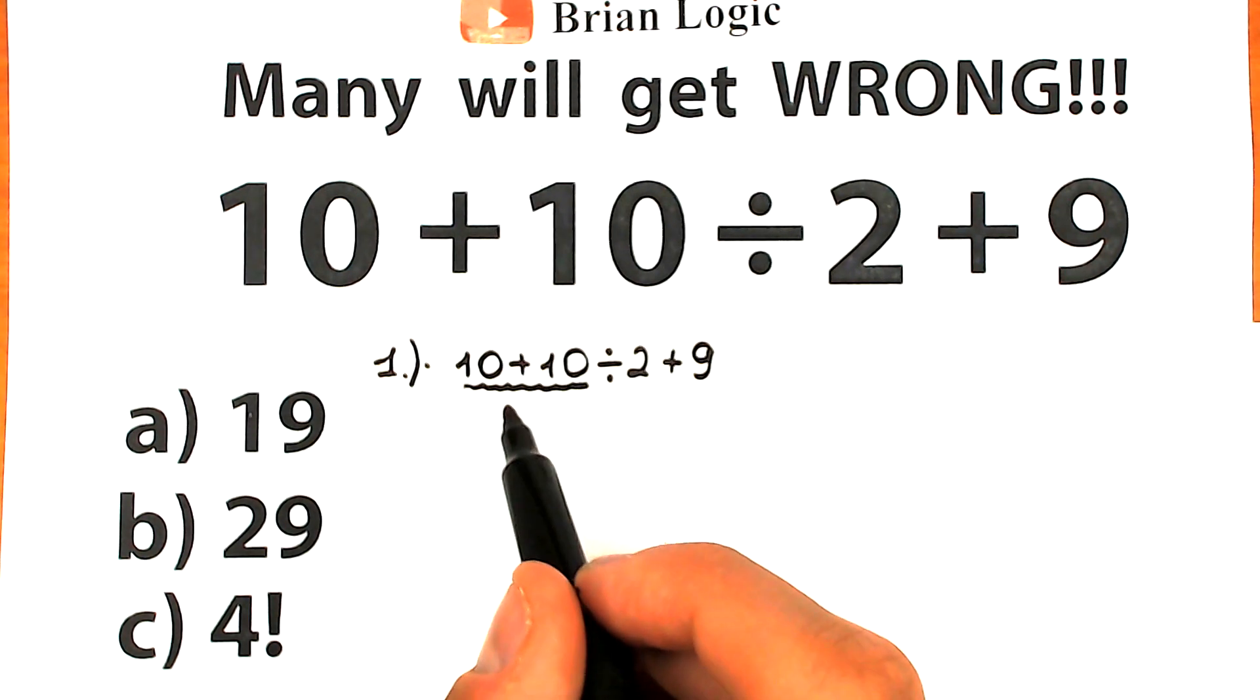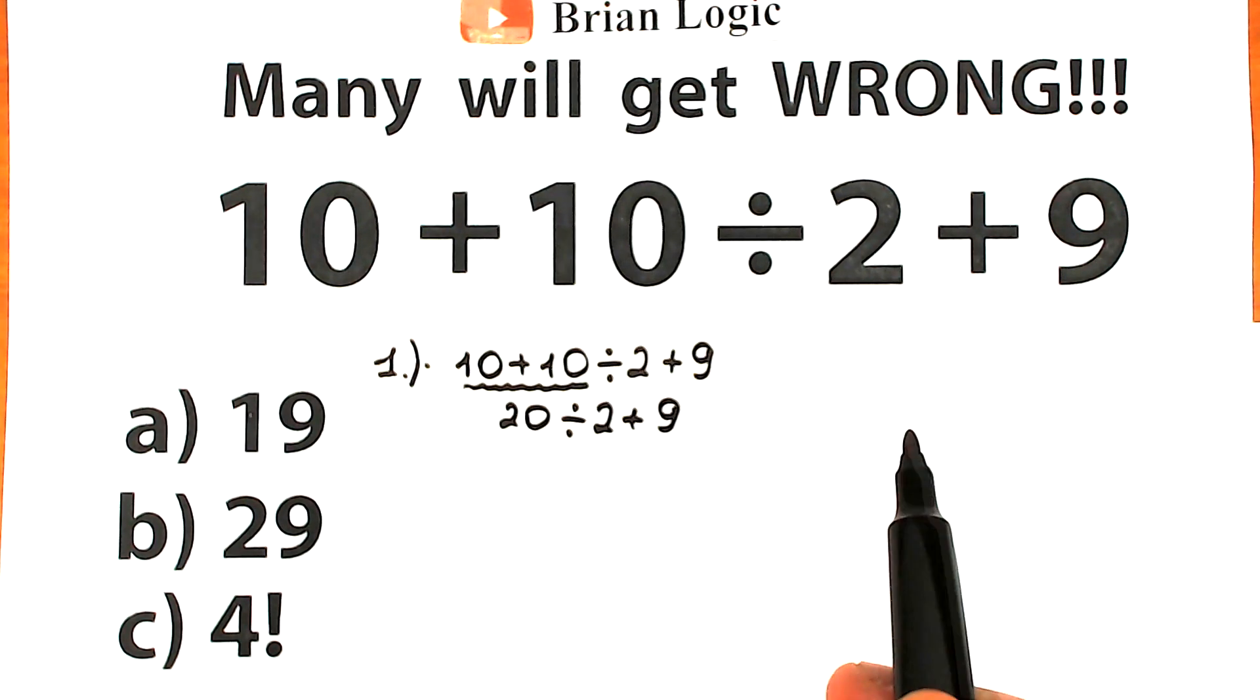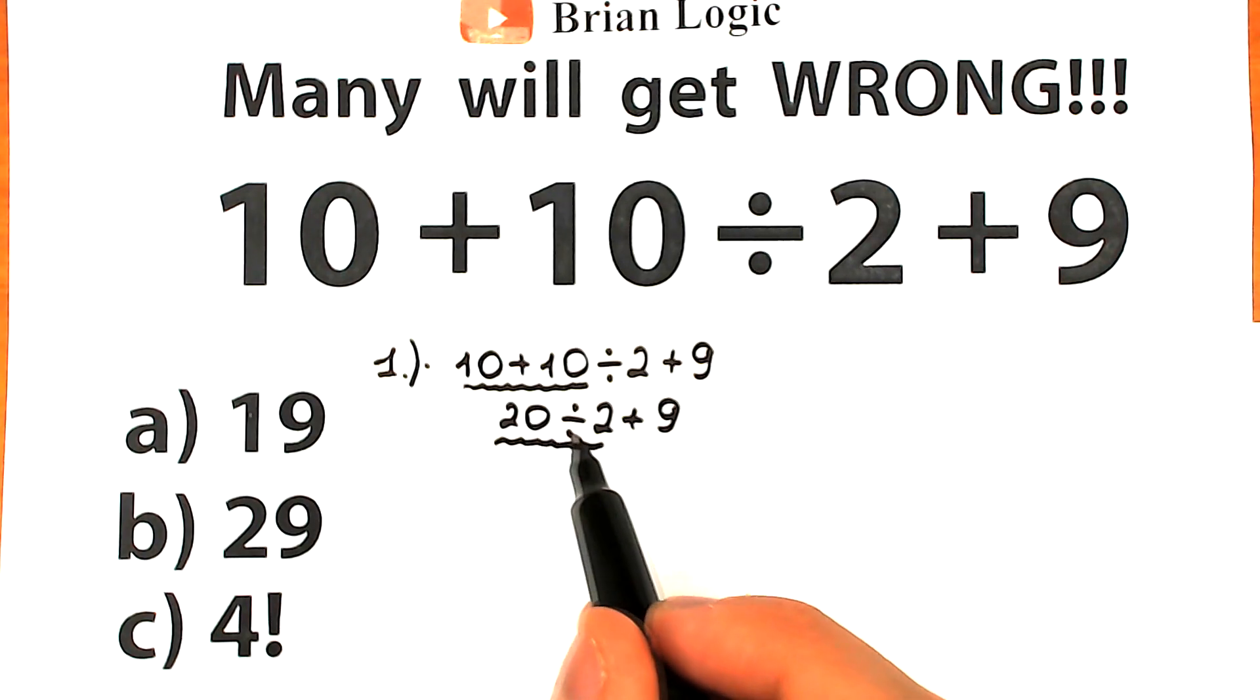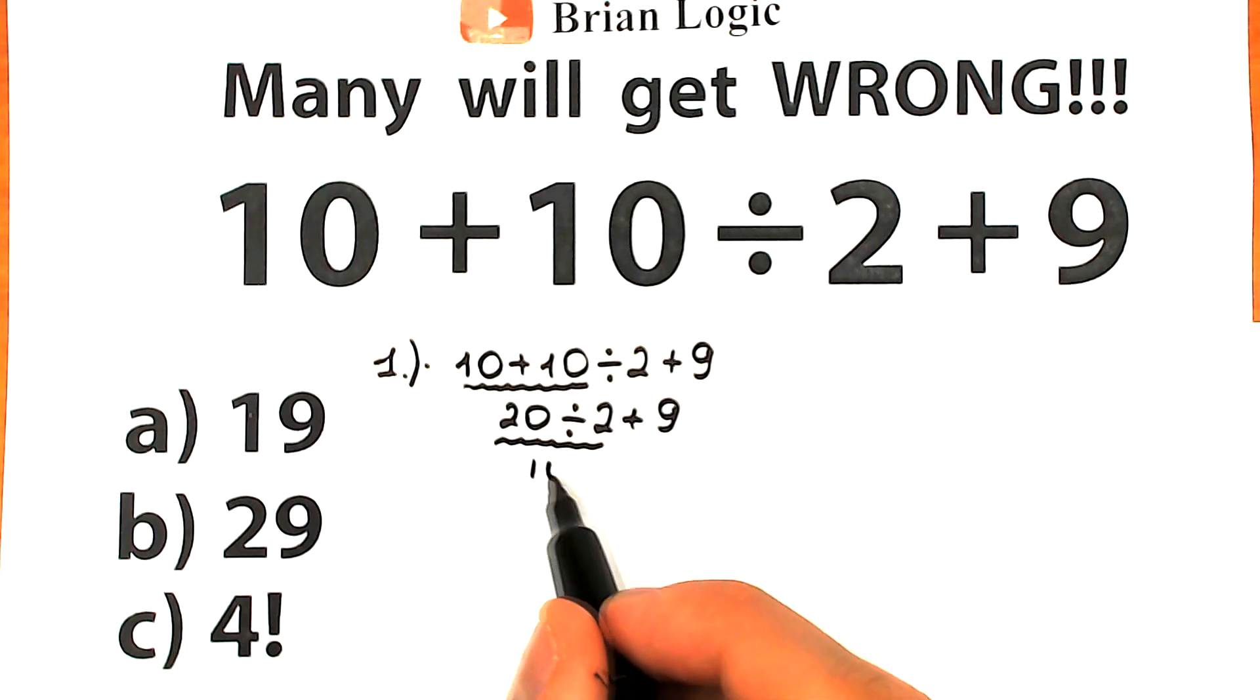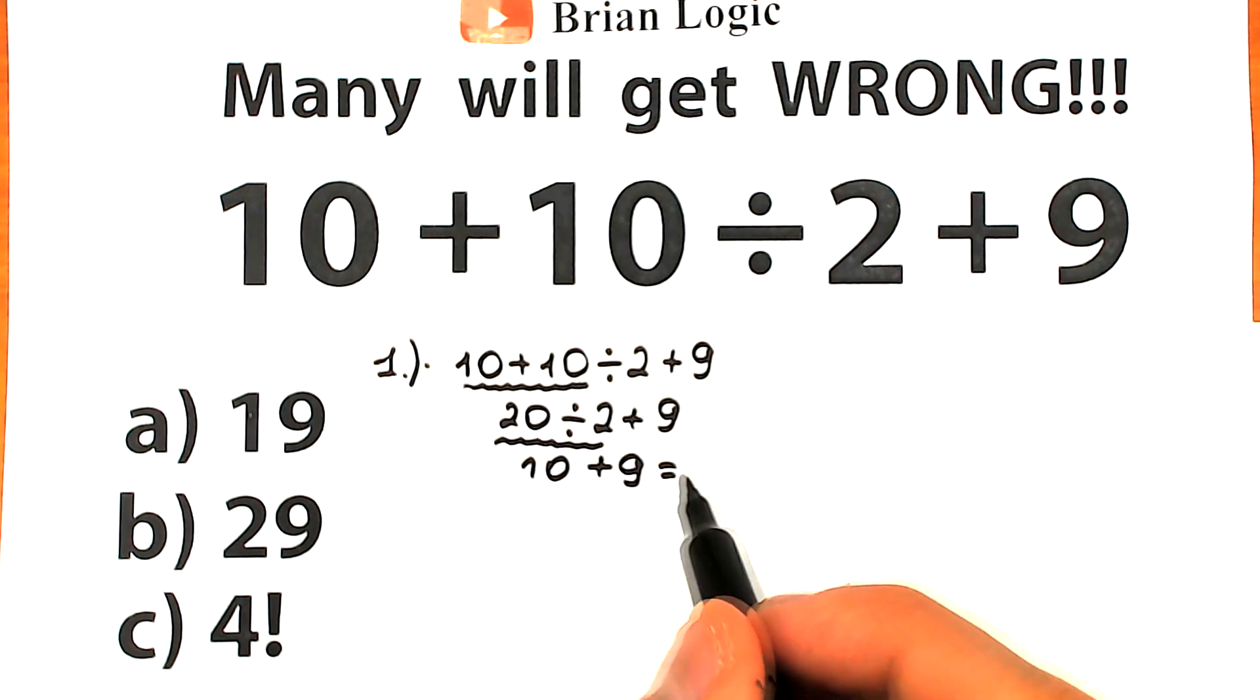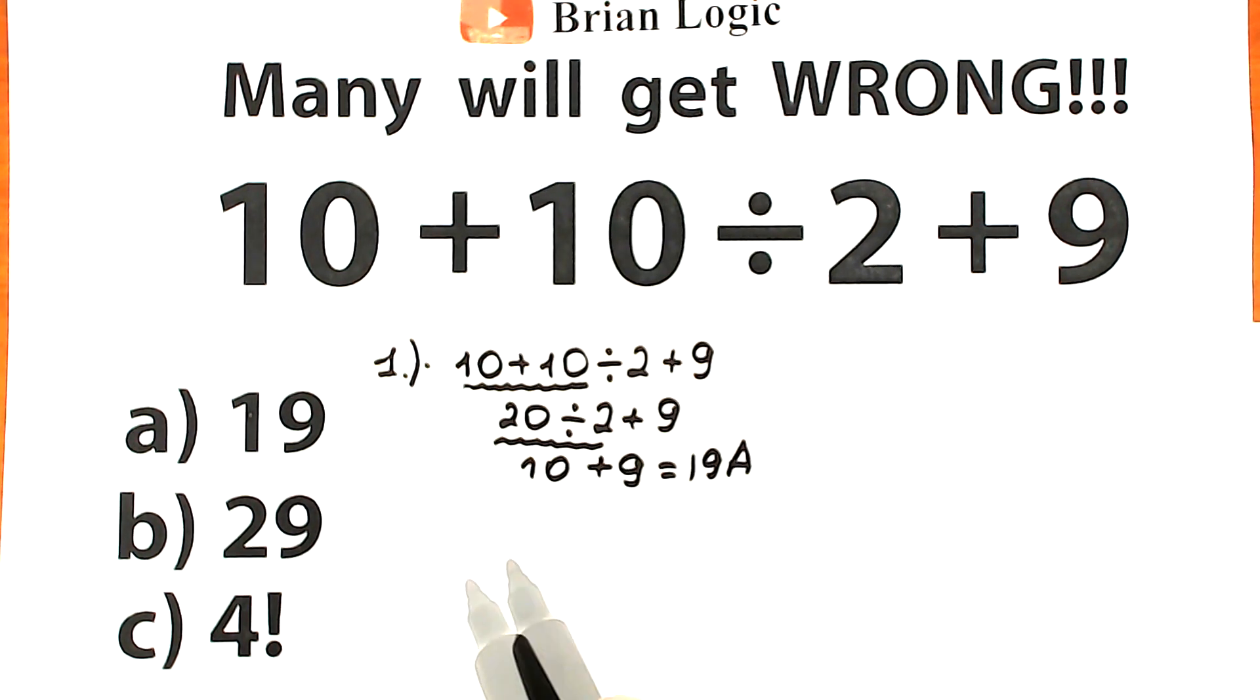10 plus 10 equal to 20. 20 we still have this expression. So 20 divided by 2 and plus 9. Okay, so here's our expression right now. Once more from left to right. 20 divided by 2 equal to 10. And 10 plus 9 equal to 19. And we have this option. This is option A. So a lot of students solve this question like that. They say the correct answer is option A.